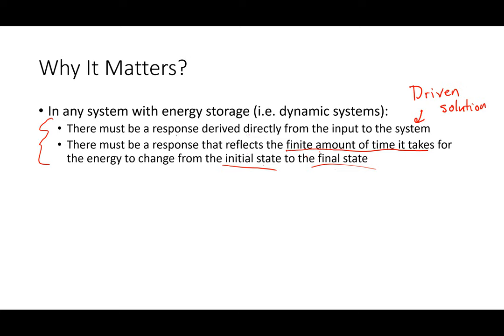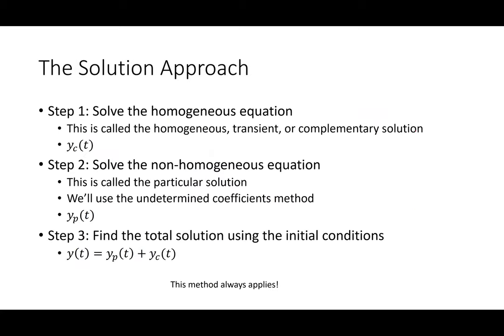There are always two components to my solution: this response that reflects a finite amount of time it takes for energy to change from its initial state to its final state, and the steady state solution that reflects the impact of the input. In general, when we approach these problems there's a three-step process. In the book in section 7.3 — step one is solve the homogeneous equation, which means find my transient solution.